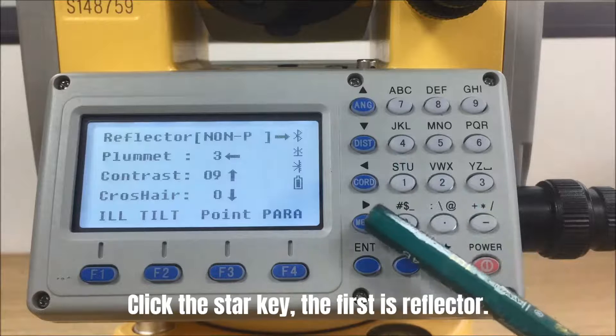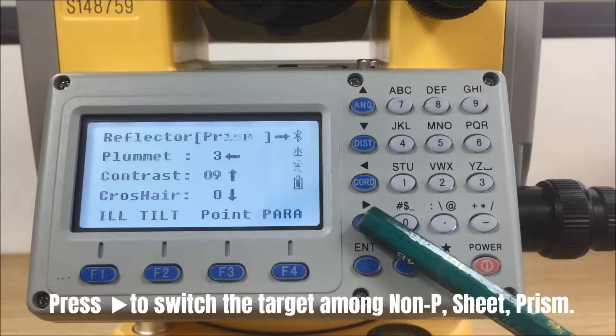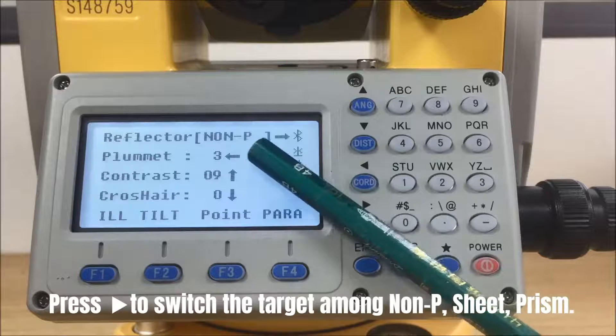Click the star key. The first is reflector. Press the right button from navigation key to switch the target among non-prism, reflective sheet, or prism.